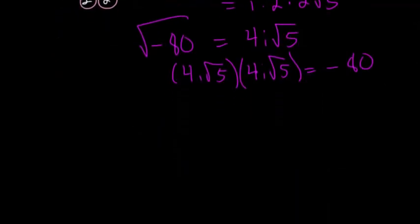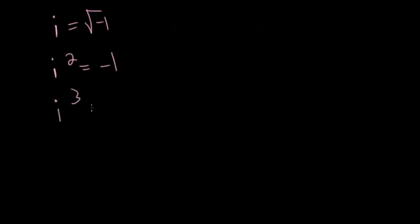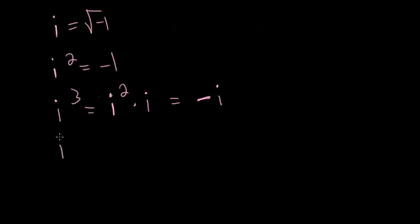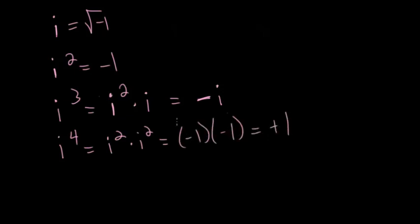To finish, let's talk about the different powers of i. We know i is the square root of minus 1, and i squared is minus 1. For i cubed, we can rewrite it using exponent rules as i squared times i. Since i squared is negative 1, i cubed is simply minus i. For i to the fourth, we write it as i squared times i squared, which is negative 1 times negative 1, giving positive 1.